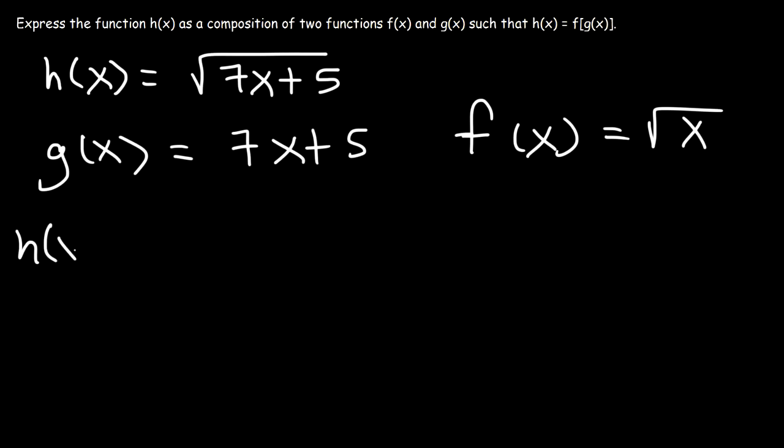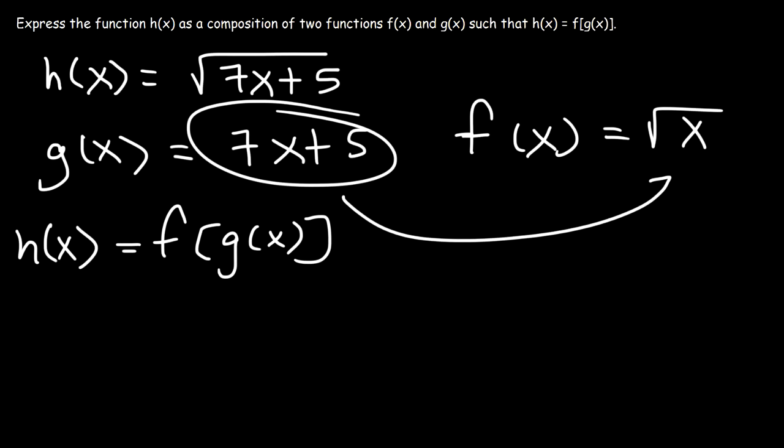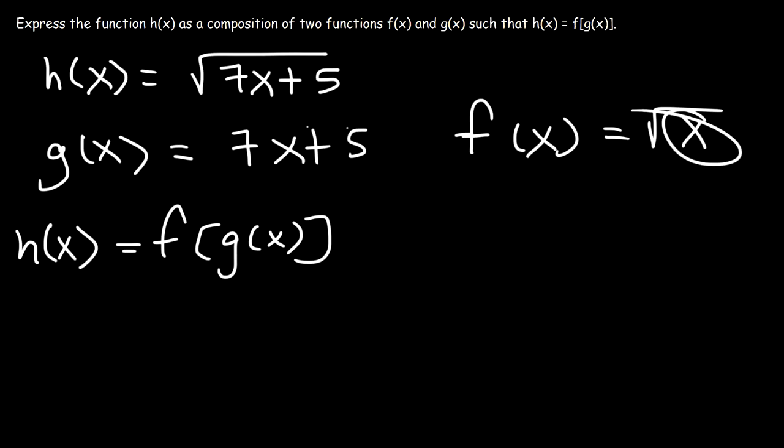If we want to determine h of x, which is the composition of f and g, notice that if we take g and insert it into f, that is, if we replace this x with 7x plus 5, that will give us h of x. Here's the square root symbol, but without the x. So, replace the x with 7x plus 5, and that will give us the original function.